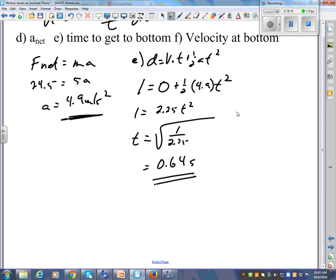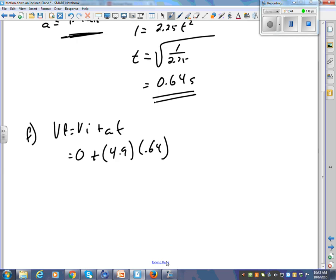All good? No? I took times by 2.25 to the other side, it becomes 1 divided by 2.25, and then square root. Velocity at the bottom would just be VF equals VI plus A T. Zero plus that acceleration of 4.9 times time of 0.64. How fast is it going at the bottom of the ramp? 3.14 meters per second. Just a coincidence, nothing to do with pi.